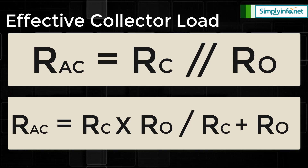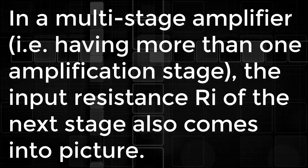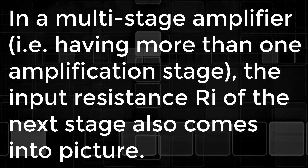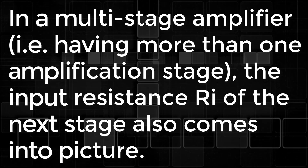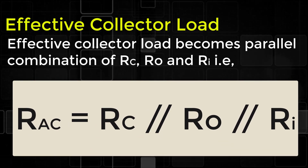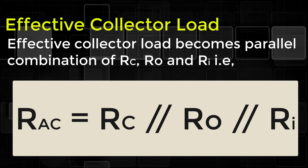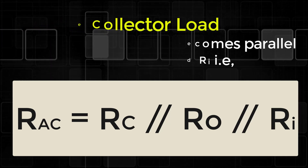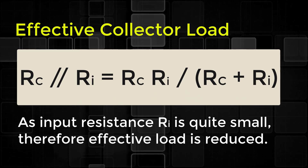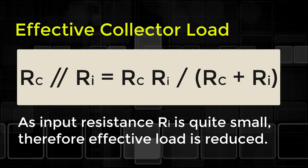For a single-stage amplifier, effective load is equal to collector load RC. In a multistage amplifier having more than one amplification stage, the input resistance RI of the next stage also comes into picture. The effective collector load becomes the parallel combination of RC, RO, and RI: RAC = RC × RI / (RC + RI). As input resistance RI is quite small, the effective load is reduced.